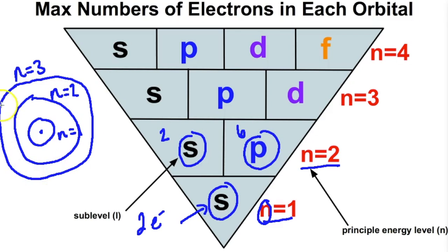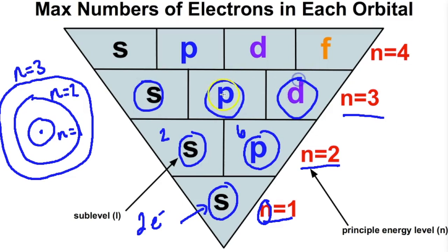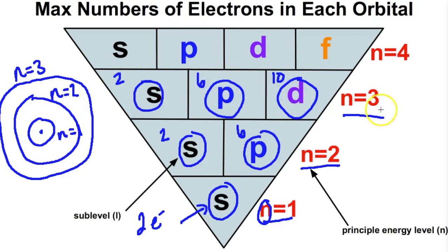The third energy level contains three sublevels: the s orbital, the p orbitals, and the d orbitals. The s can hold a maximum of two, the p's can hold a maximum of six, and because there are five different d orbitals each holding two, the d sublevel holds ten electrons. Ten plus six plus two equals eighteen, so the third energy level can hold a maximum of eighteen electrons.